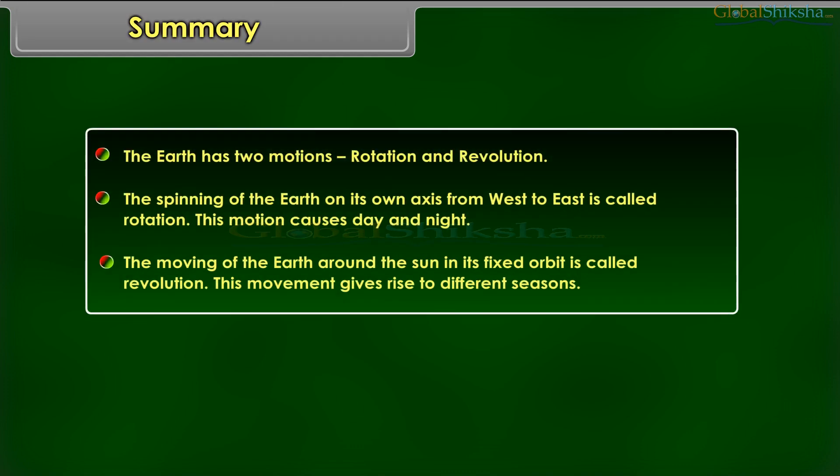The earth has two motions: rotation and revolution. The spinning of the earth on its own axis from west to east is called rotation, and this motion causes day and night. The moving of the earth around the sun in its fixed orbit is called revolution, and this movement gives rise to different seasons.